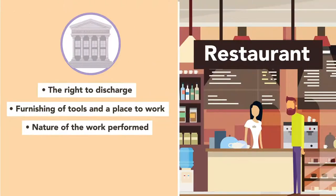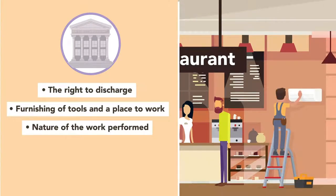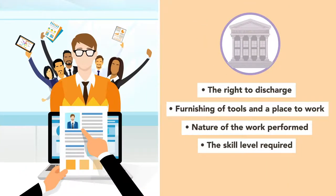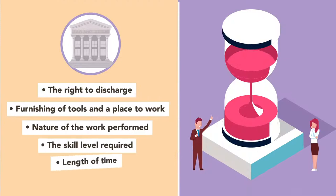Nature of the work performed: a person will probably not be characterized as an employee if the services performed are distinct from those that the employer typically performs. For example, if the company is a restaurant and someone is brought in to temporarily install an air conditioning unit, that person is less likely an employee than someone brought in temporarily to wait tables. The skill level required: if a person performs a service that requires a special skill, he is less likely to be considered an employee. The classic example is an accountant brought in to prepare a company's income tax returns. Length of time: courts will consider the length of time the person is retained; the more permanent the relationship, the more likely he will be deemed an employee.